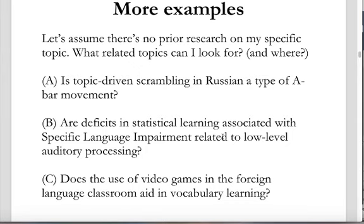Here's a second example, more from a psycholinguistics or speech-language pathology perspective: 'Are deficits in statistical learning associated with specific language impairment related to low-level auditory processing?' This is a real research question from my collaboration with Michelle Moore in the communication sciences department at WVU. Statistical learning is a particular kind of ability humans have to acquire generalizations from the probabilistic properties of inputs they're exposed to. Deficits are cases where people have trouble with this statistical learning process, and they appear associated with a disorder called specific language impairment, or SLI — though they keep changing the name.